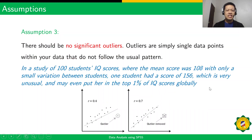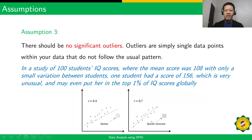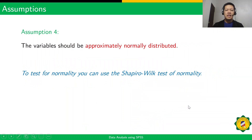The third assumption is that there should be no significant outliers. Outliers are single data points within your data that do not follow the usual pattern, as you can see here in the scatter plot. The fourth assumption is that the variables should be approximately normally distributed.